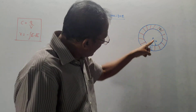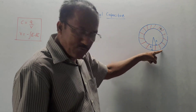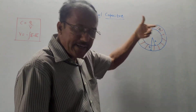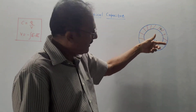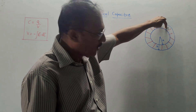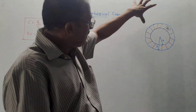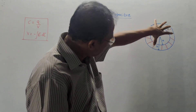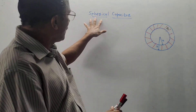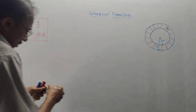The gap between the two spheres is filled with some medium — a material whose permittivity is epsilon. This structure acts as a capacitor, and because of its nature or construction it is known as a spherical capacitor.